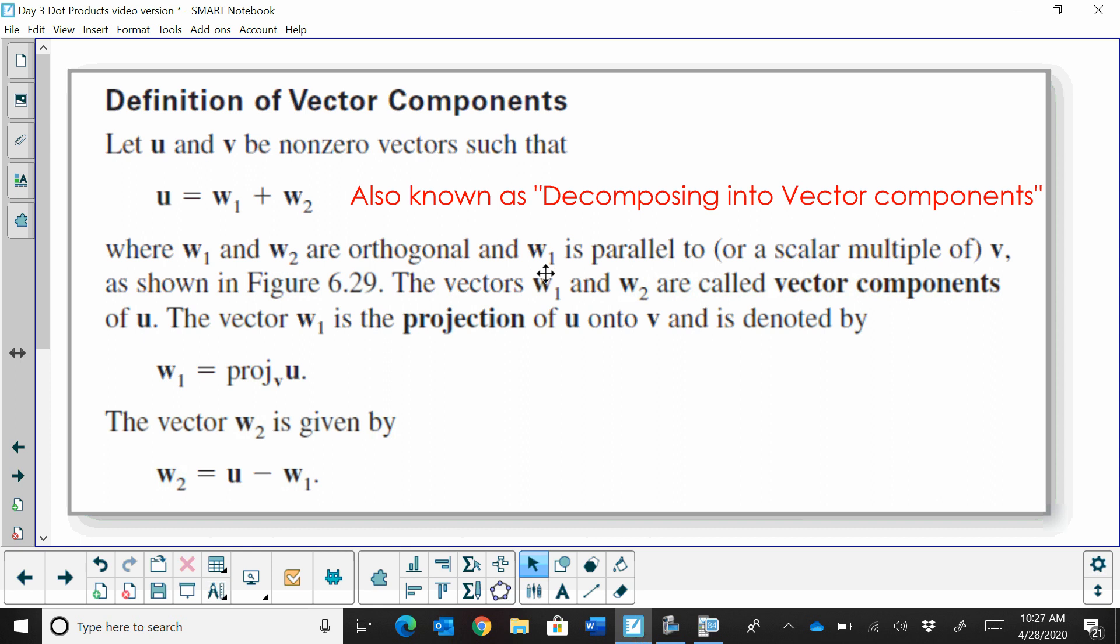w sub 1 is parallel to a scalar vector v. So we're going to take the path of w up vector v, and then we're going to make a right angle, so it's going to be orthogonal to the other component, which is w sub 2.